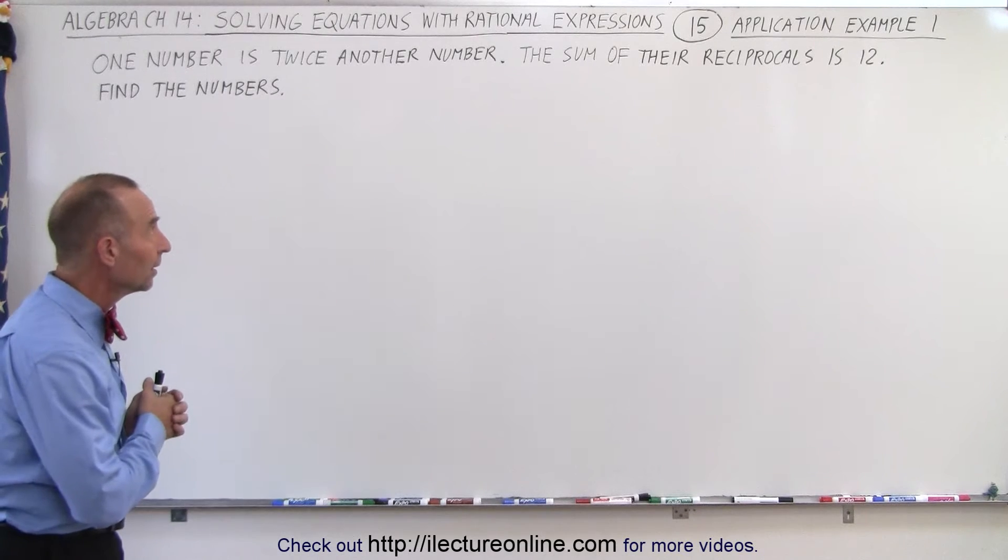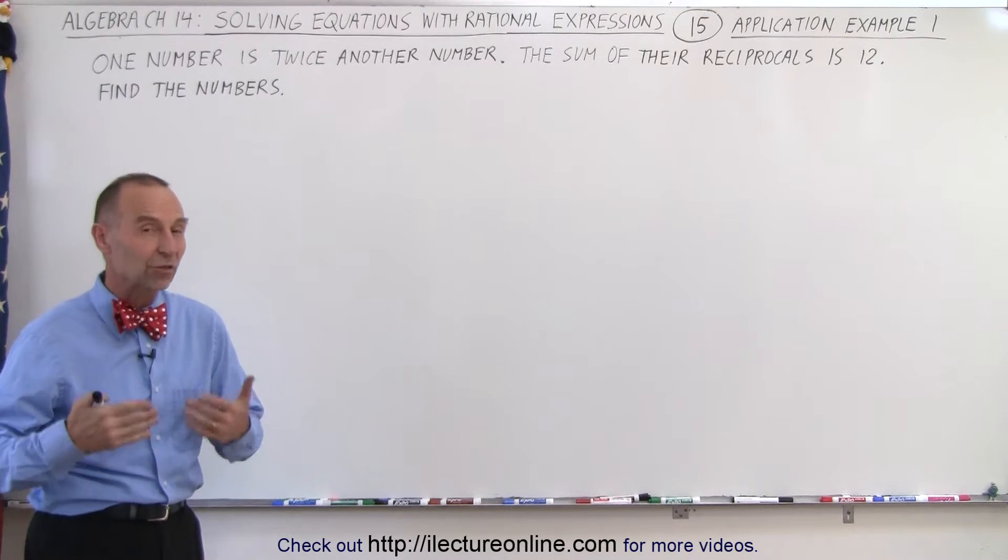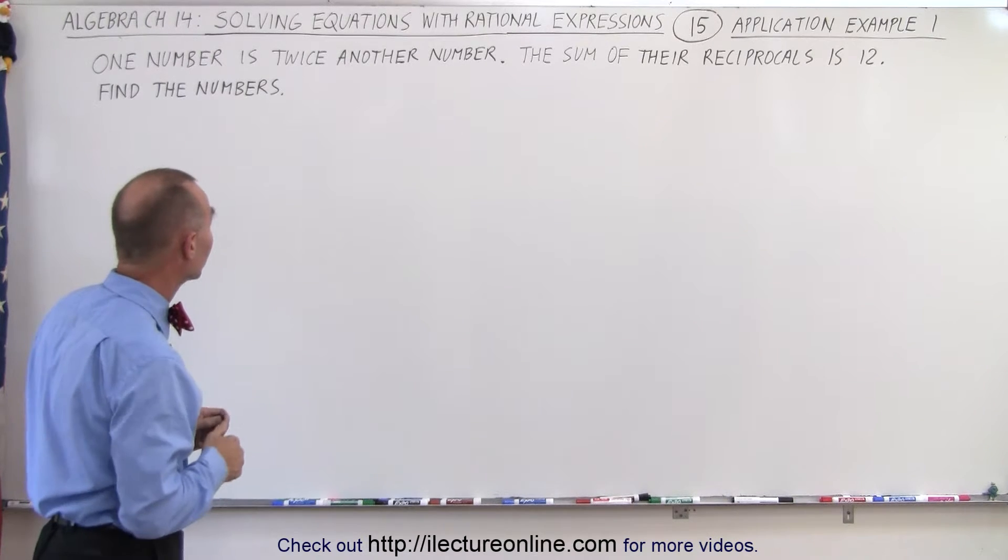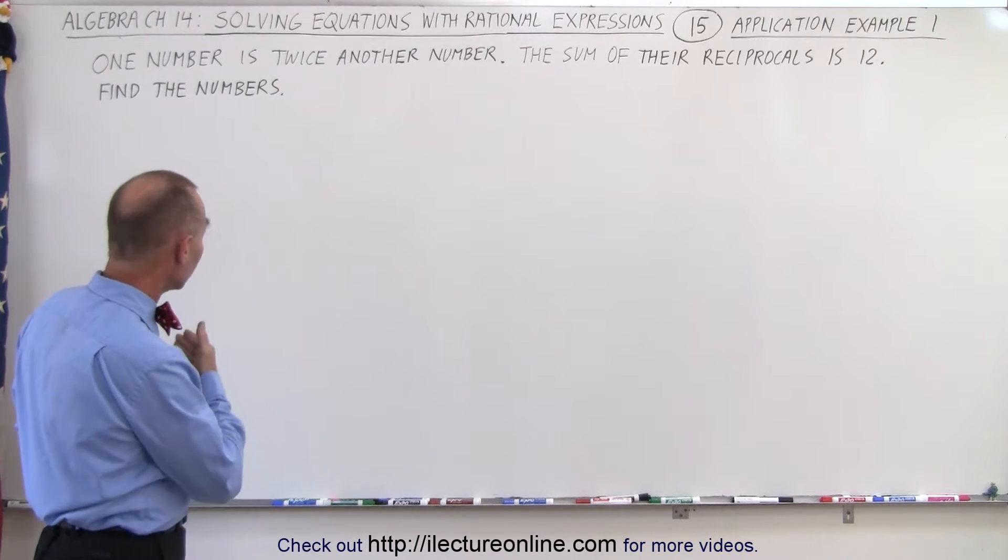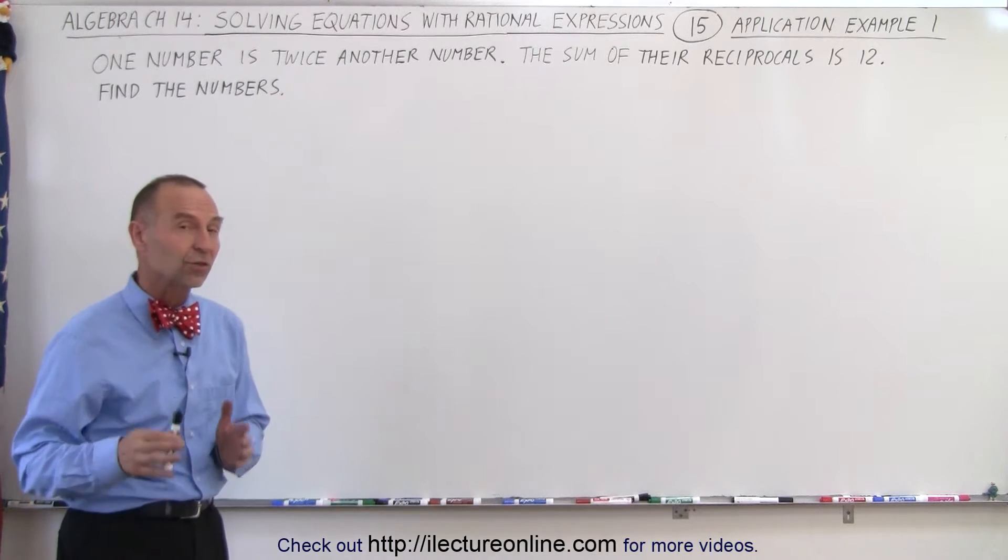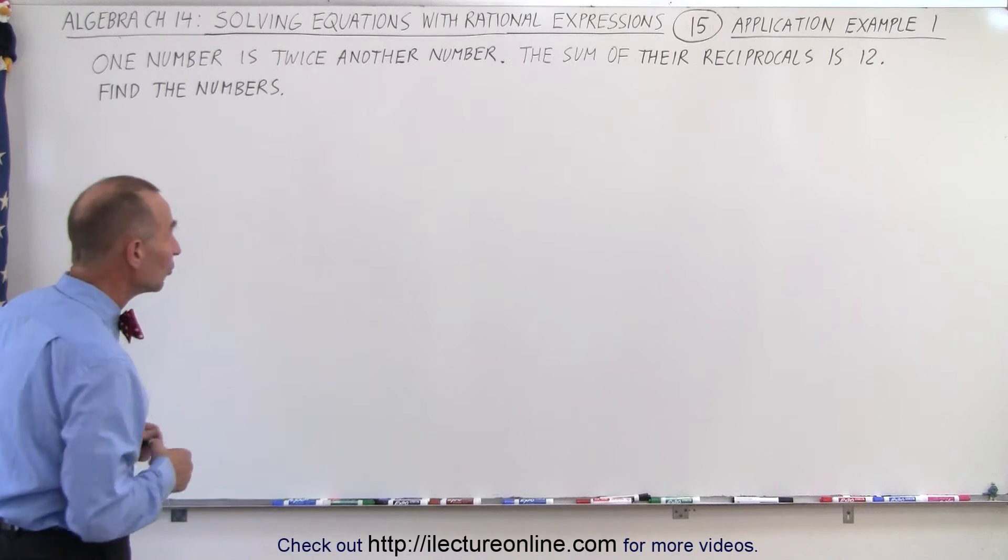Welcome to our lecture online. Now that we know how to solve equations with rational expressions, let's apply them to something like this. We are told that one number is twice another number and that the sum of their reciprocals is 12. Find those numbers.